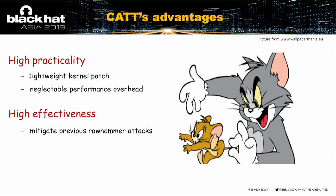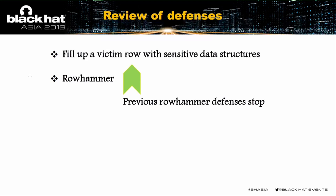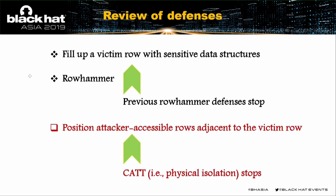So, Tom the CAT catches the mouse Jerry. Before we compromise CAT, let's summarize the key steps required for a Rowhammer exploit. First, we need to fill up the victim row with sensitive data structures such as page tables. Next, we position attacker-accessible rows adjacent to the victim row. Last, we perform the Rowhammer. If we gain privilege escalation, we succeed. All defenses prior to CAT try to mitigate the first and last steps — eliminating or detecting the Rowhammer bug. But CAT is tolerant to Rowhammer and instead tries to prevent the victim row from being approached by attacker-accessible rows.